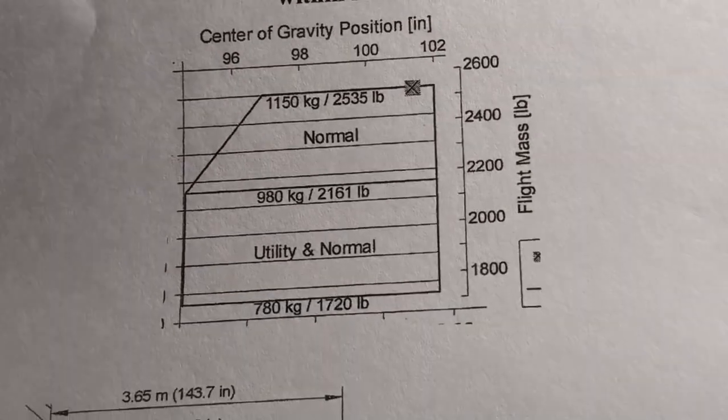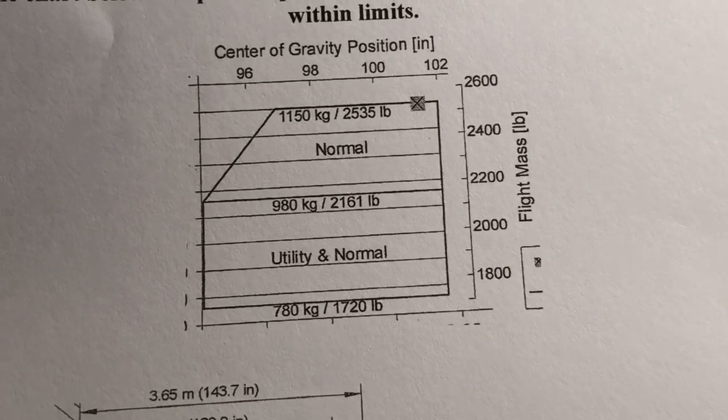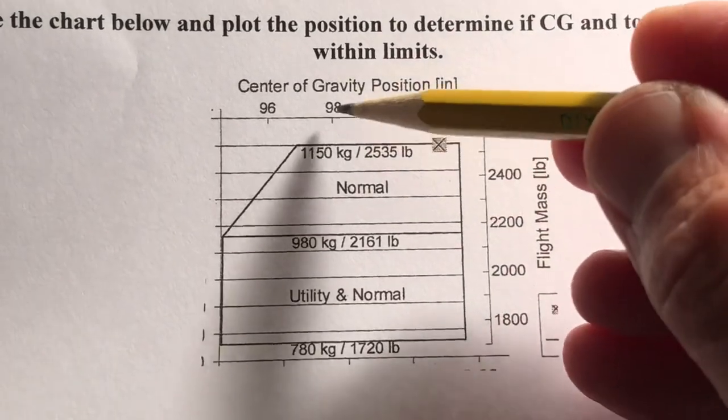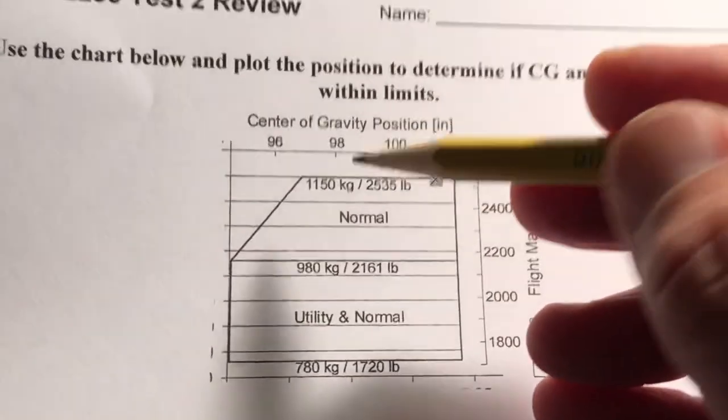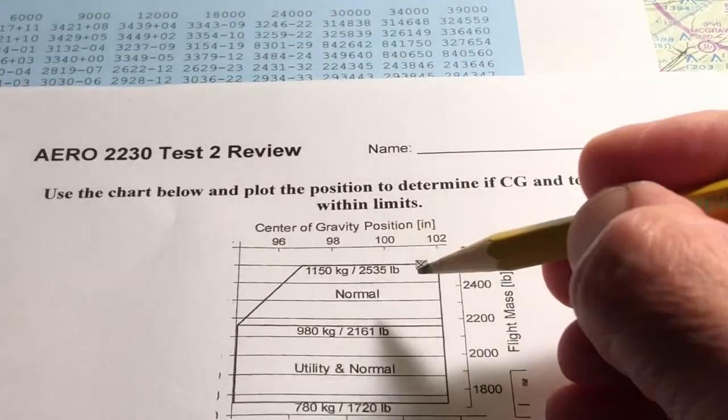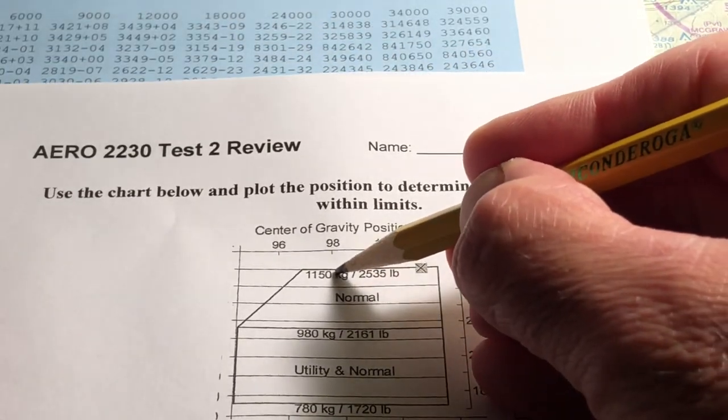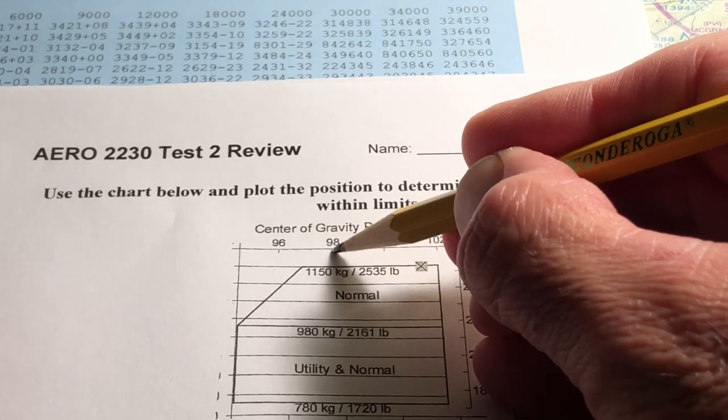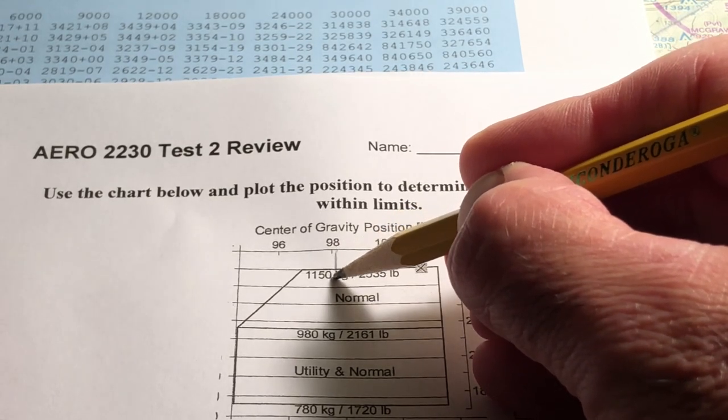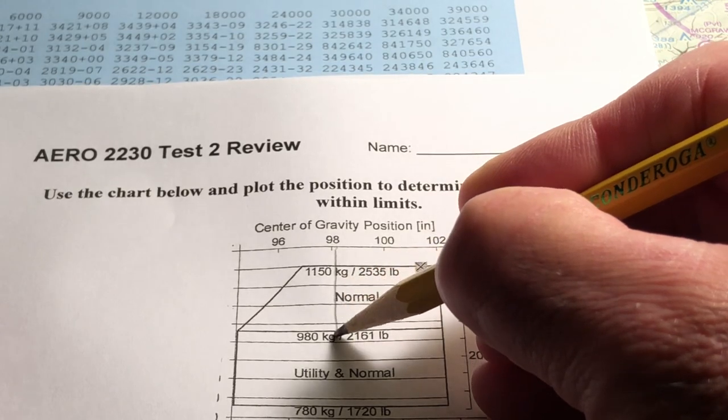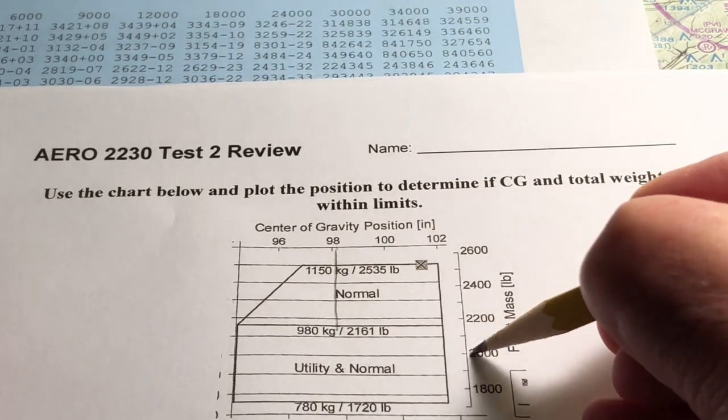What we need to do is find the weight and the CG on this envelope. We need to draw a line from the CG, which is 98.077. So I'm going to draw a line straight down from here, just a tick above 98.